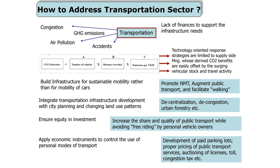For that, we need to build infrastructure for sustainable mobility rather than mobility of cars. Integrate transportation infrastructure development with city planning and changing land use patterns, which can be achieved by decentralization and decongestion activities — Mumbai has attempted decongestion by developing a new town called New Mumbai. Then ensure equity in investment; try to promote infrastructure so that needs of all sections of society are met, not just motorized modes, but also those poor who rely on non-motorized modes and public transport. Apply economic instruments to control the use of personal modes of transport by means of congestion tax, making vehicle registration more expensive, and so on.